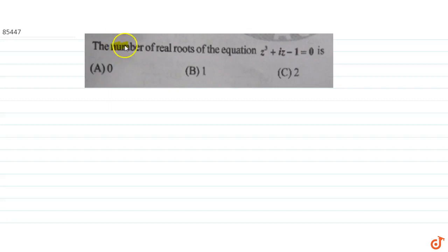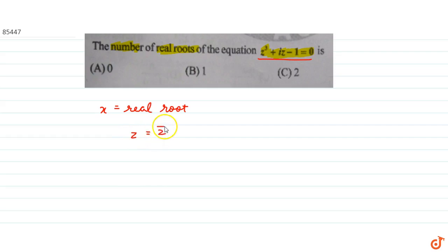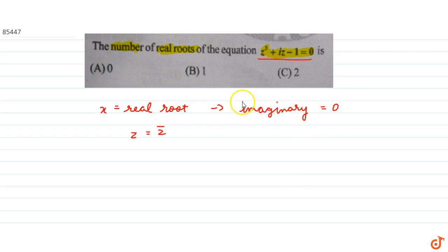In this question we have to find the number of real roots of the equation z³ + iz - 1 = 0. Now, if this equation has a real root — say x is a real root — then z should equal z̄, because x is a real root, so the imaginary part of this equation should be equal to 0. So z should be equal to z̄.